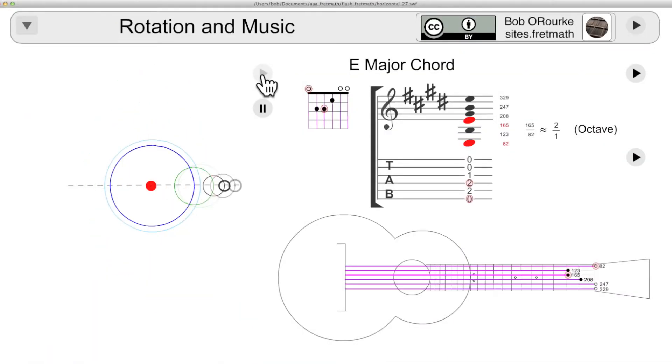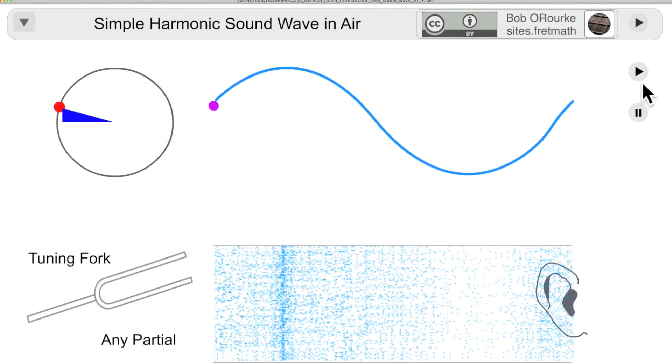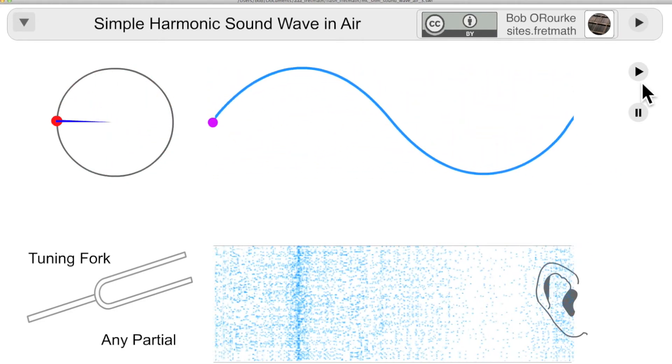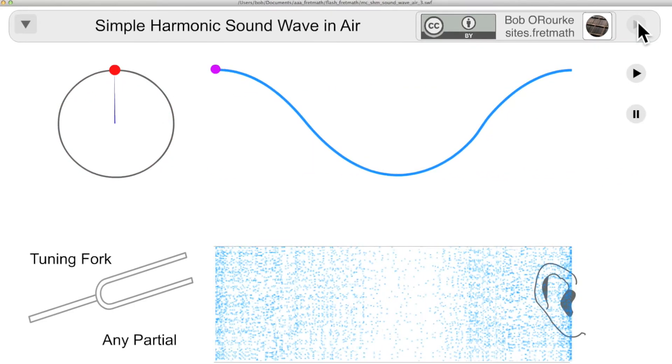A mathematical description starts with the circular rotation, which projects onto that sine wave. Underneath is the relative air pressure, and that would be a tuning fork or any partial of a complex wave.